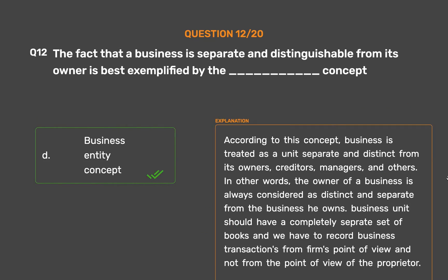According to this concept, business is treated as a unit separate and distinct from its owners, creditors, managers, and others. The owner of a business is always considered as distinct and separate from the business he owns. The business unit should have a completely separate set of books, and we record business transactions from the firm's point of view, not from the point of view of the proprietor.